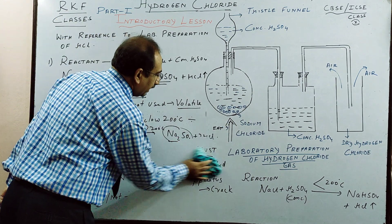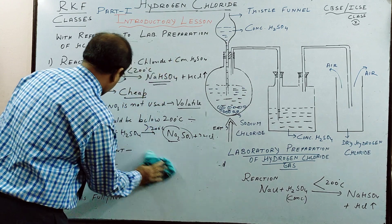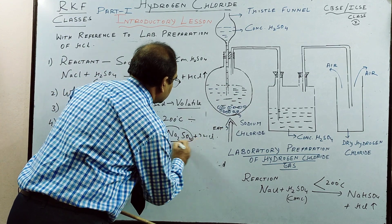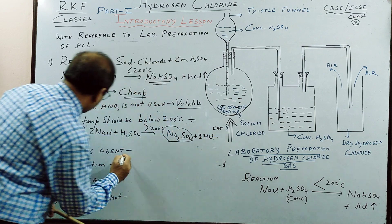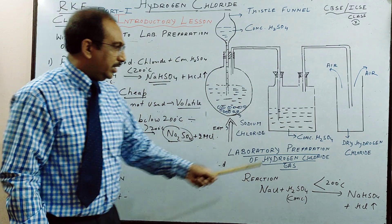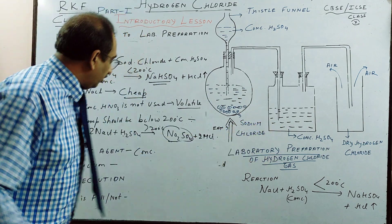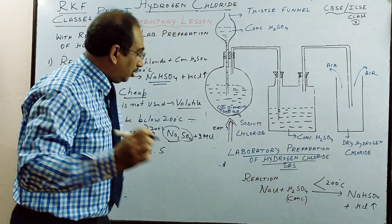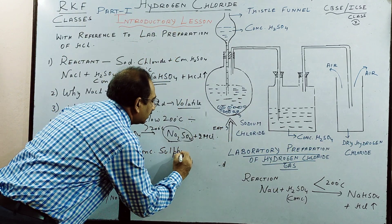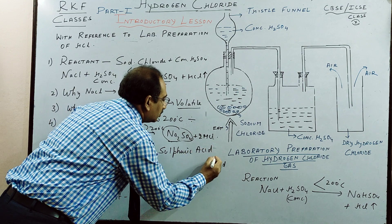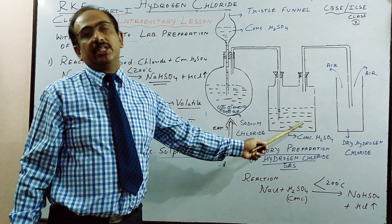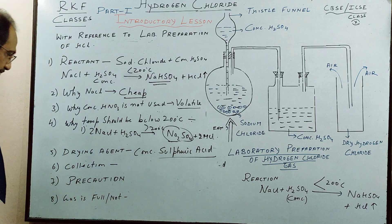Next thing: what drying agent do we use? The drying agent is concentrated sulphuric acid. Please write 'concentrated' — don't just write the molecular formula, because there is a difference. Writing it in words is better than writing in formula. So the drying agent is concentrated sulphuric acid — same as one of the reactants.